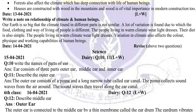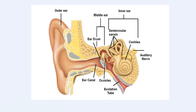The sound waves travel along the ear canal. The pinna collects the sound waves and sends them to the ear canal. So the outer ear has two main parts: the pinna and the ear canal. The function of the pinna is to collect sound waves, and the ear canal is the connection between the outer ear and the middle ear, passing the sound waves from the outer ear to the middle ear.